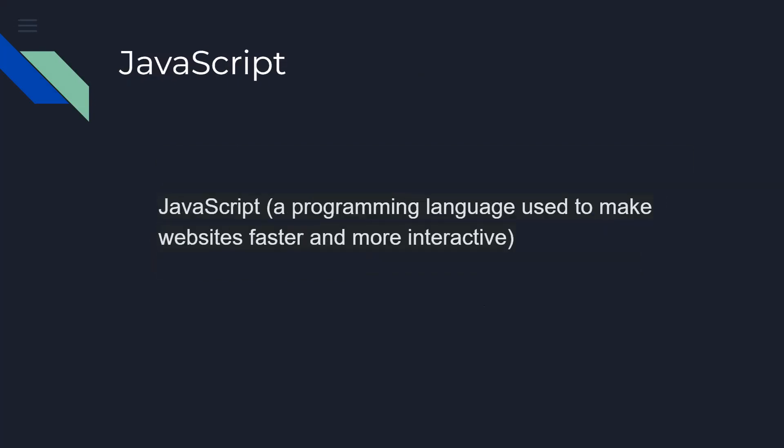Once we get our hands on the backend and we're able to do some things on the backend, we can come back to the front end. For the front end we're going to use JavaScript — those things you see on the page. For the backend, you don't really see them on the surface; they don't appear on the app, but they are really happening in the backend.